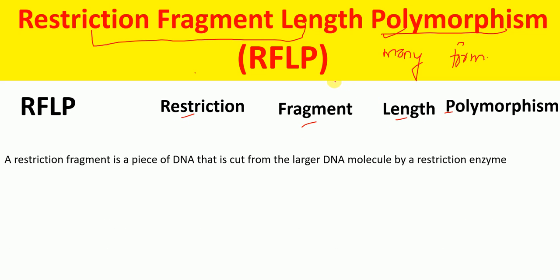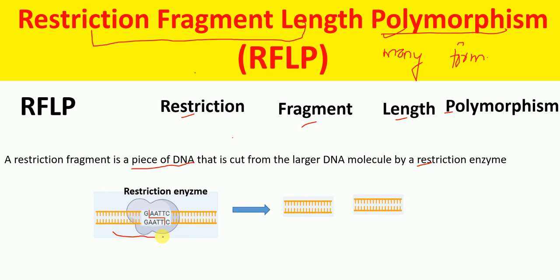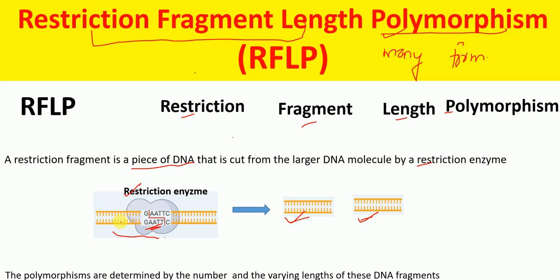A restriction fragment is a piece of DNA that is cut from a larger DNA molecule by a restriction enzyme. For example, if we have a larger DNA molecule and use a suitable restriction enzyme, it recognizes its restriction site — in this case one restriction site — and cuts the DNA molecule into two fragments, as shown here.